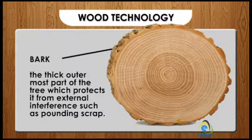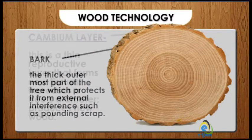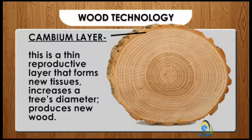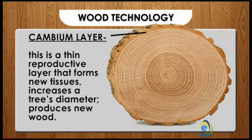external interference such as pounding or scraping. Two: cambium layer — this is a thin reproductive layer that forms new tissues. It increases a tree's diameter and produces new wood.